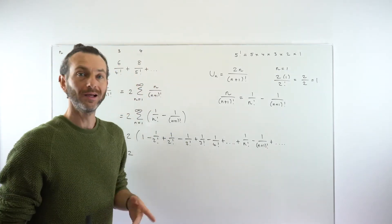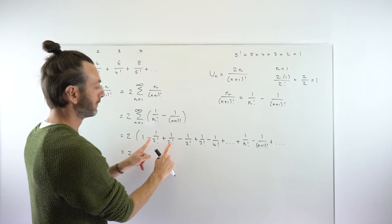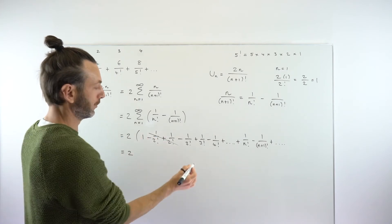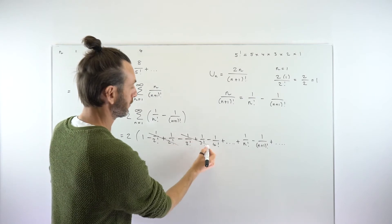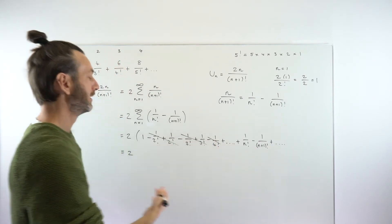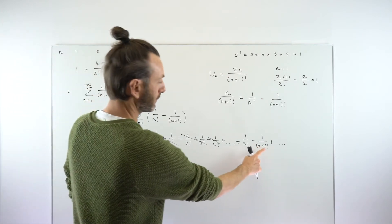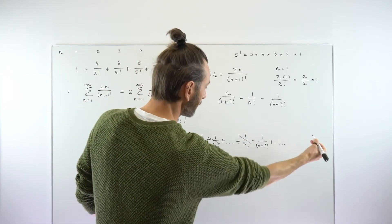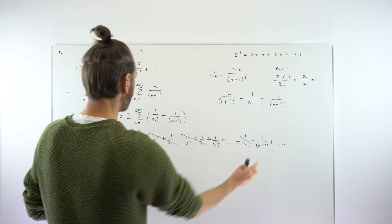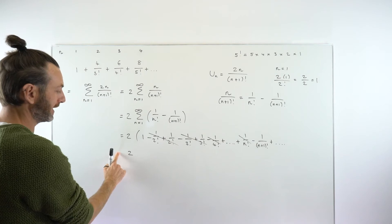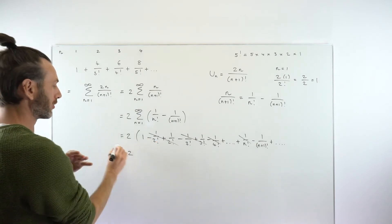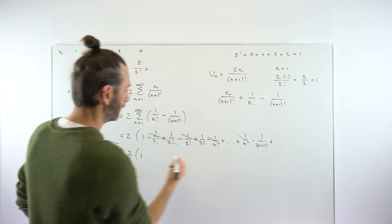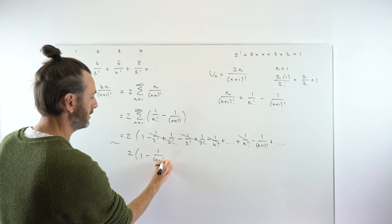Let's just consider stopping at n terms. After all the cancellation, we're left with 2 times 1 — everything else cancels — minus 1/(n+1)!. So if you knew how many terms you wanted, you could plug in that n value and work out the sum of that finite portion of the series. But that's not quite good enough for us, because our n value never stops — it goes on forever.